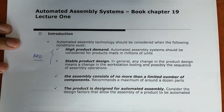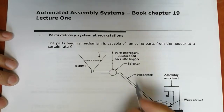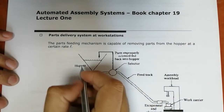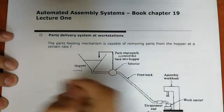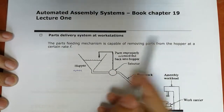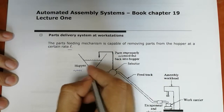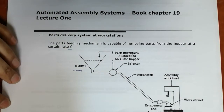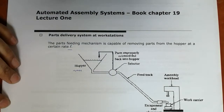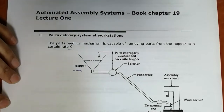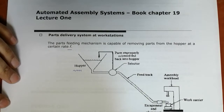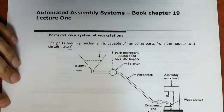Here is an example of a parts delivery system at the workstation. First, we have the hopper — a container where all components are loaded. The parts feeding mechanism is capable of removing parts from the hopper at a certain rate F. If we have different workstations, it is better to use a separate hopper. Components are initially oriented in the system, and then we use what is known as a selector or orienter.